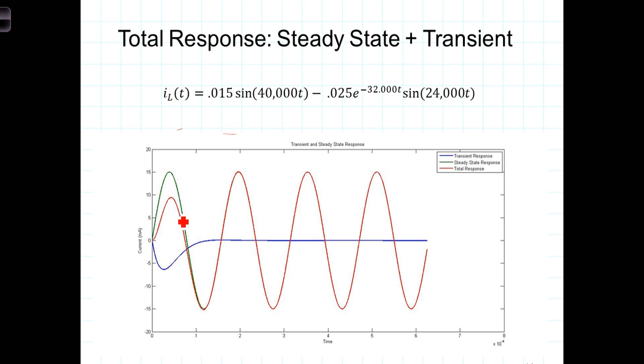The steady state response is this red term, and the total response is the green. So the total response consists of the sum of the transient response plus the steady state response. And as the transient response dies out, the total response approaches and ultimately becomes the sinusoidal steady state.